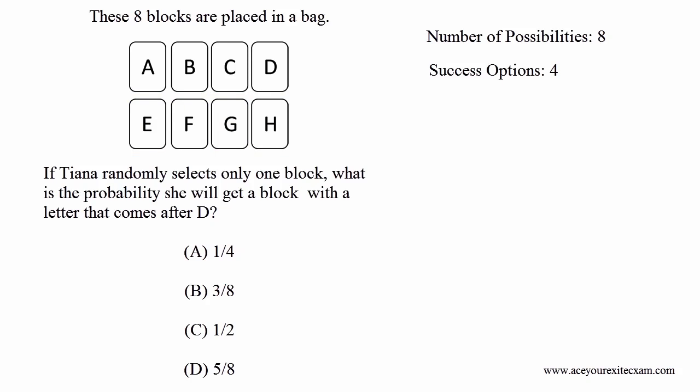So we see that out of the eight blocks that Tiana could select, four of those blocks will be letters that come after D. This means she has a 4 in 8 chance, making the probability 4 over 8.